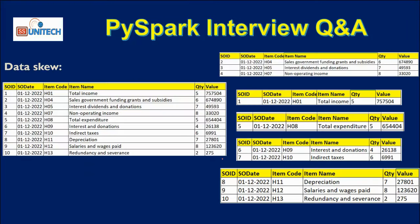First we have to understand what data skew is. Let's assume we have a dataset containing a total of 10 million rows, and the data is partitioned unevenly — for example, 3 million in one partition, 1 million in another, 2 million in one partition, and again 3 million in another partition.